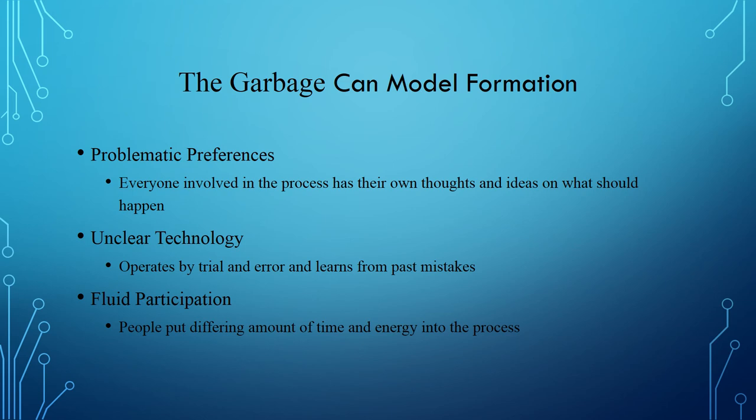Unclear technology doesn't refer to technology itself — it refers to the process and the people involved. The processes operate by trial and error and learn from past mistakes. The people involved have learned what hasn't worked before, so they translate that into new policy, but they're still not sure how the new policy will actually work once it's been implemented.